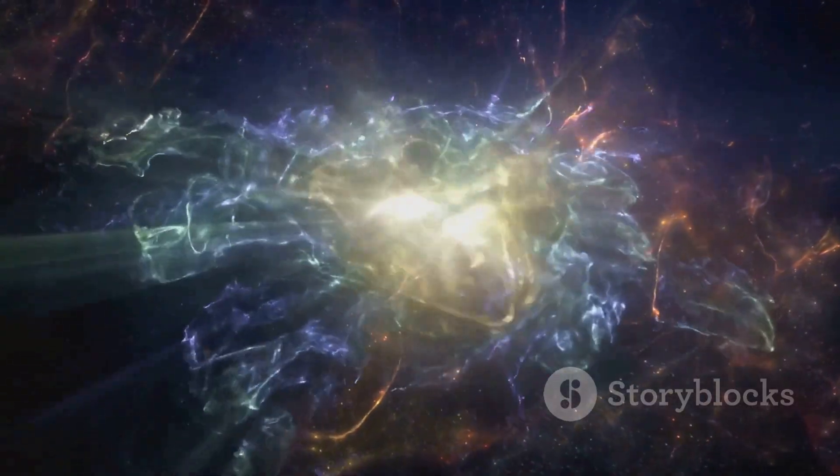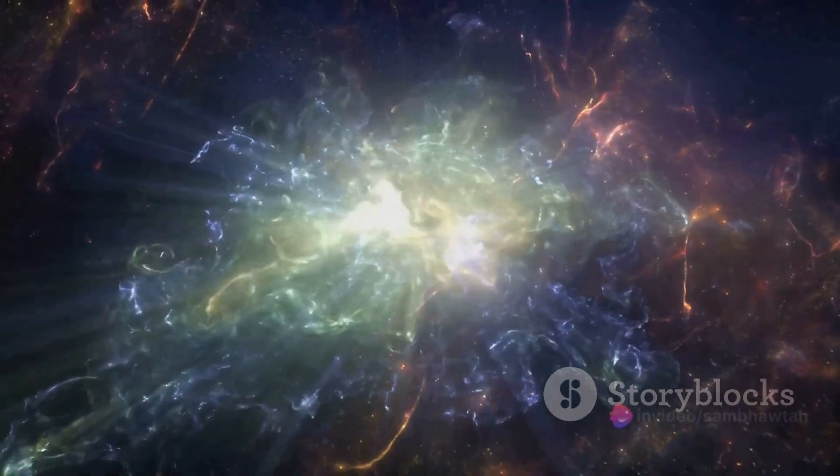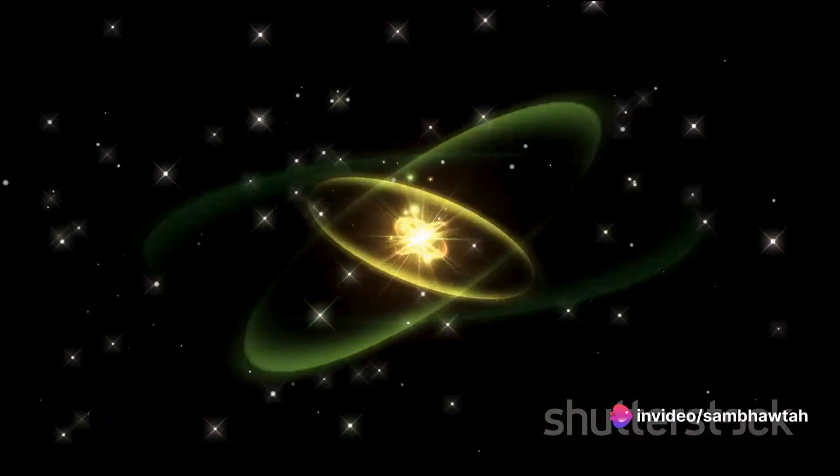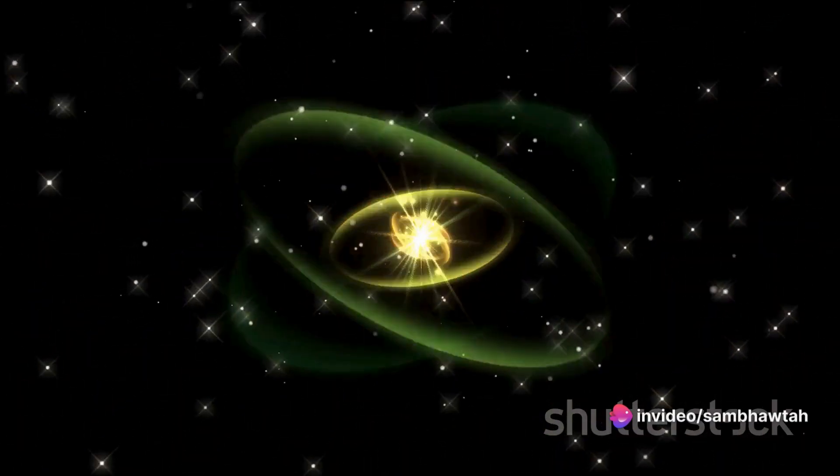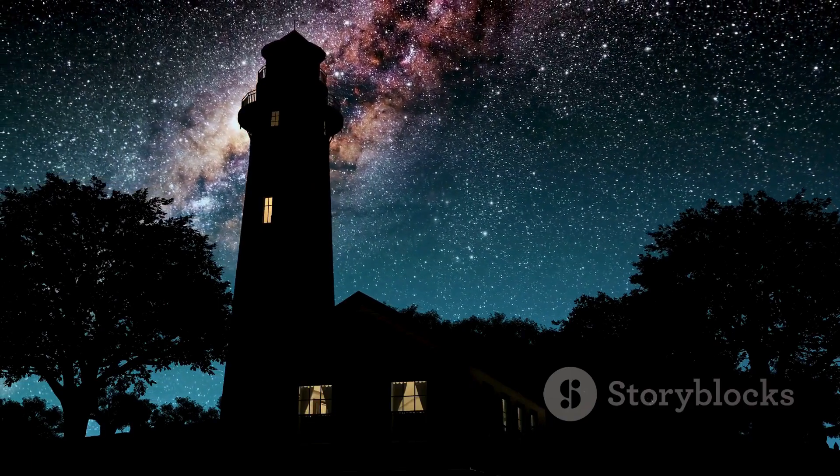Some of these neutron stars, known as pulsars, rotate rapidly and emit beams of radiation from their magnetic poles. When observed from Earth, these beams appear as regular pulses, hence the name pulsars. It's like the universe's own cosmic lighthouses.